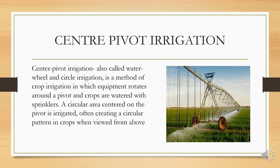The last type of irrigation is center pivot irrigation, also called water wheel or circle irrigation. It is a method of crop irrigation in which the equipment rotates around a pivot and crops are watered with sprinklers. The circular area centered on the pivot is irrigated, often creating a circular pattern in the crop when viewed from above. You can see in the image the wheels and pipelines on the diagonal — that is the pivot — and sprinklers are connected vertically. The pivot rotates a complete 360 degrees.